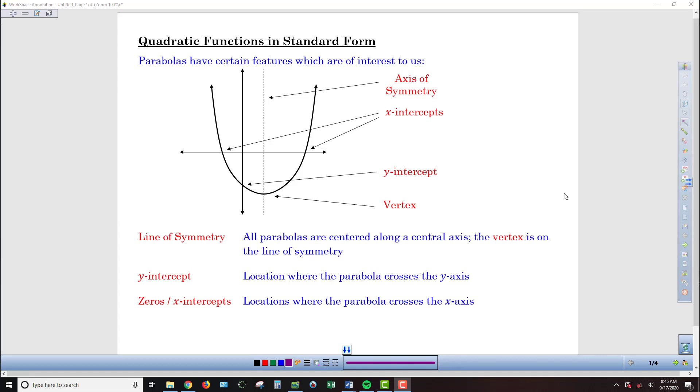When studying parabolas, there are more features that are of interest to us besides just the vertex, which has been our focus to this point. The vertex is going to be the bottom-most or top-most point of the parabola. Other objects of interest are the axis of symmetry, which is the line that cuts our parabola into two identical halves. If we were to fold the paper along that central axis, the two sides would match up perfectly.